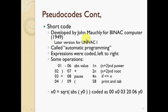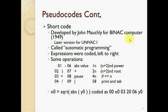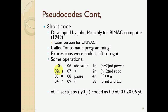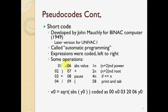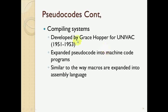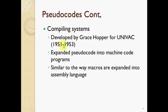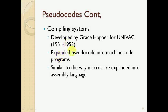Here is an example of Short Code, developed by John Mauchly for binary computers, invented in 1949. A later version for UNIVAC 1 is also called automated programming. Another example is the compile system developed by Grace Hopper for UNIVAC, 1951 to 1953, similar to macros expanded into assembly language.